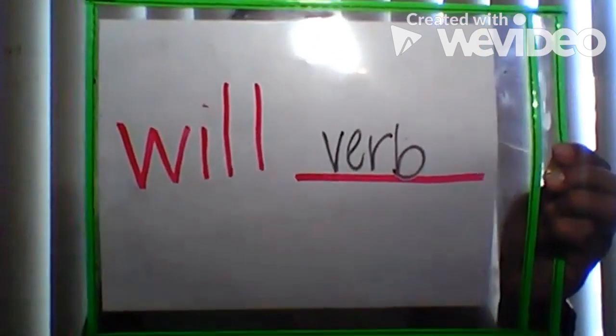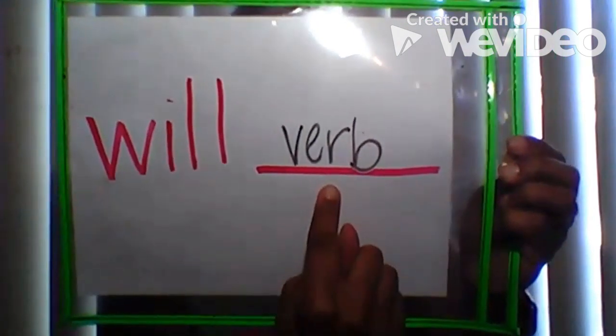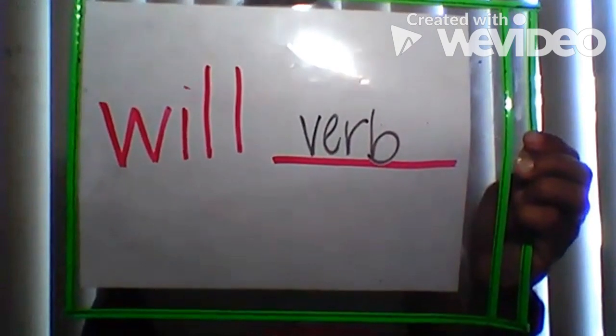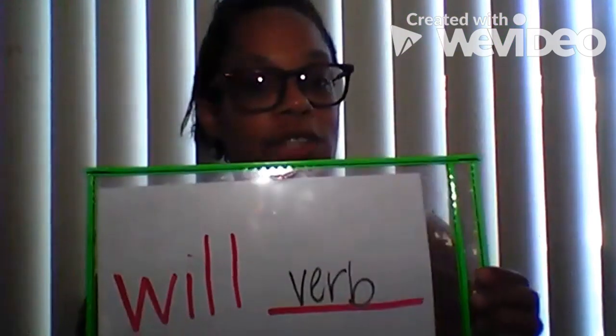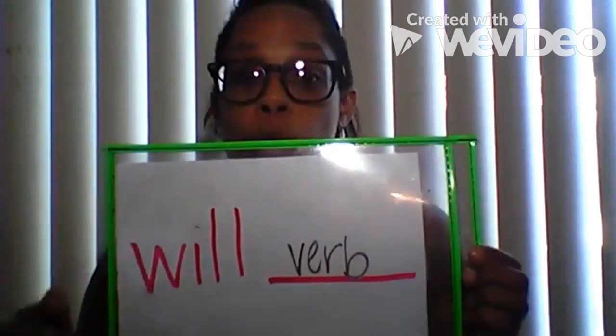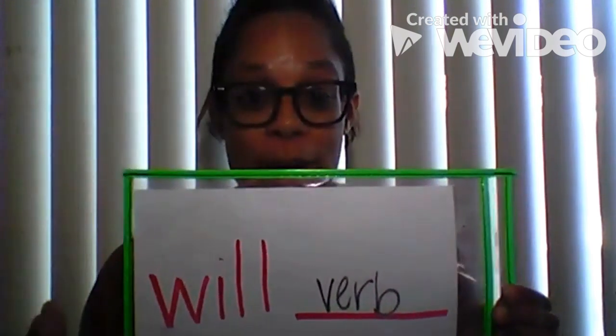Who remembers the word that we put in front of the verb in order to make it future? Do you remember that word? Did you say will? If you did, that is correct. When we put the word will in front of the verb, that makes it in the future. So can you replace the verb here to make a future tense verb or verb phrase? Hopefully you said something like will go or will make. Will is the word that makes the verb show the future tense, so it has to have that word will in order to make it future.